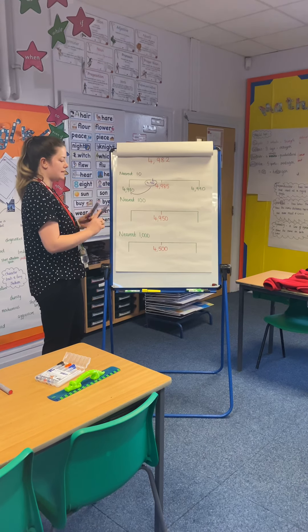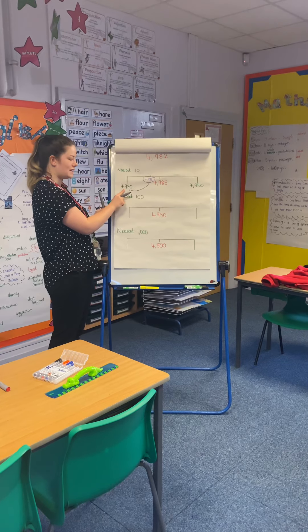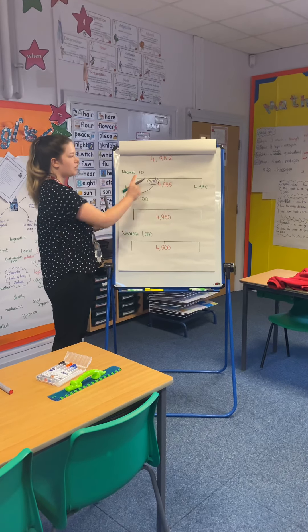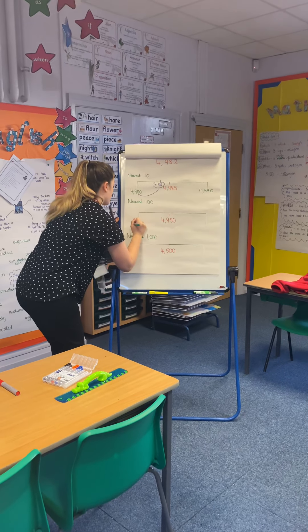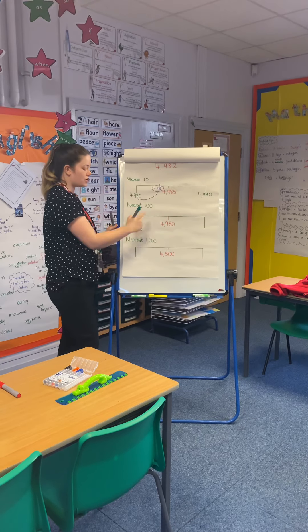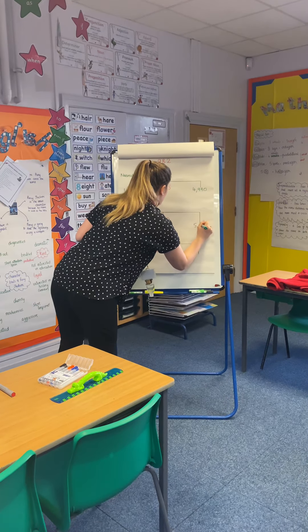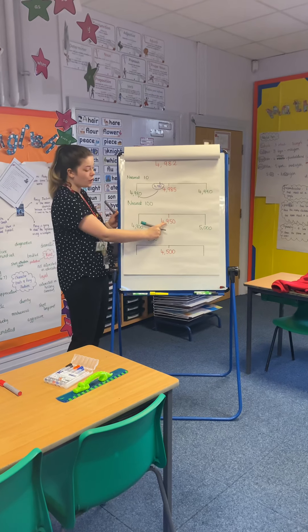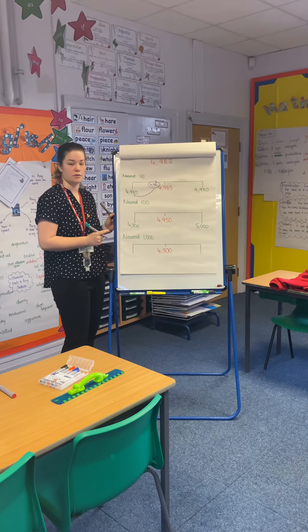Now we're going to look at rounding to the nearest 100. For the nearest 10, we had a tens number on our number line, so now we need to put a hundreds number. So 4,900 is going to go at the start of my number line. Then add 100, I would move to the next 1,000, which would be 5,000. And 4,950 is halfway between those two numbers.